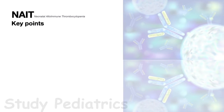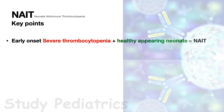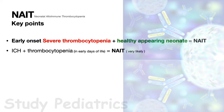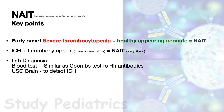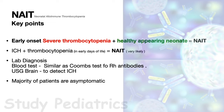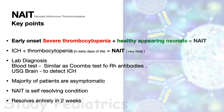NAIT should be considered in any neonate with early onset severe thrombocytopenia who appears healthy. If a neonate presents with ICH and thrombocytopenia in the early days of life, NAIT is very likely the cause. Lab diagnosis is similar to Coombs test for Rh antibodies; here, father's blood is also taken and maternal antibodies are used to check for platelet clumping, as is done with neonatal blood. Majority of patients are asymptomatic, and NAIT is a self-resolving condition, usually resolving entirely in two weeks.